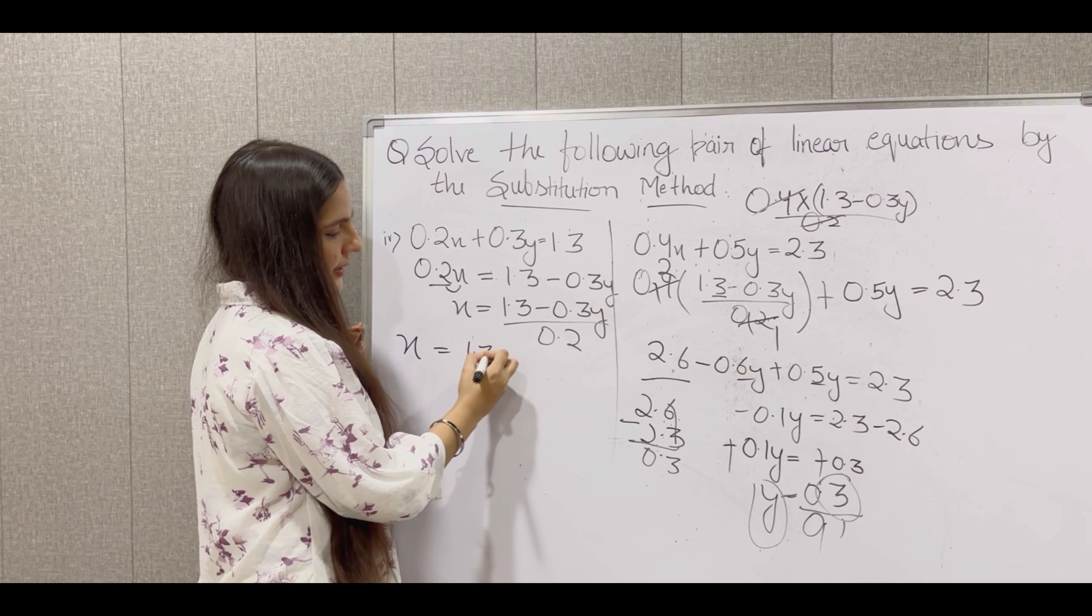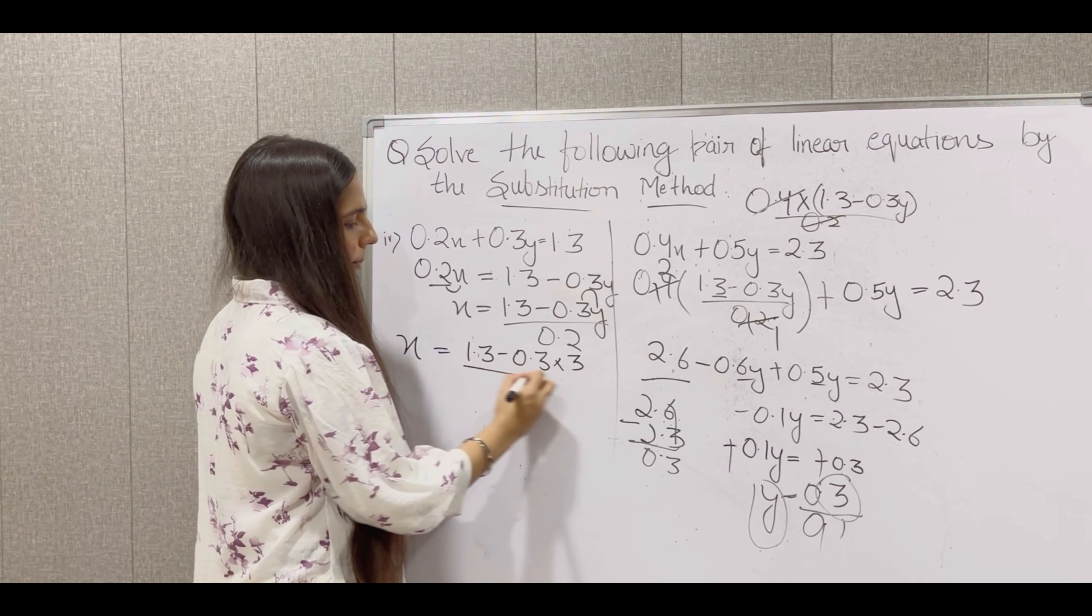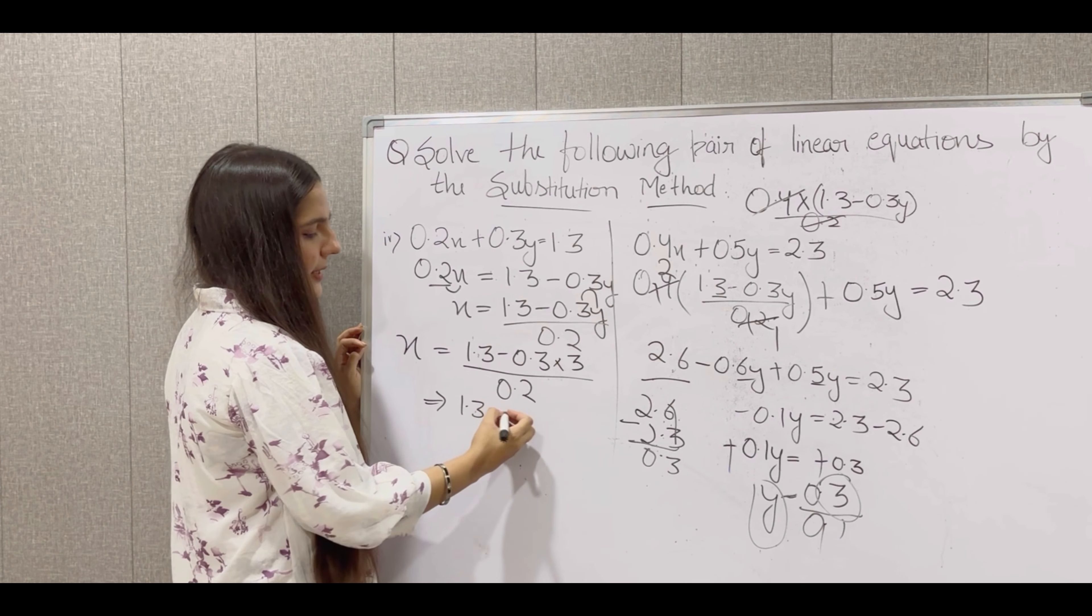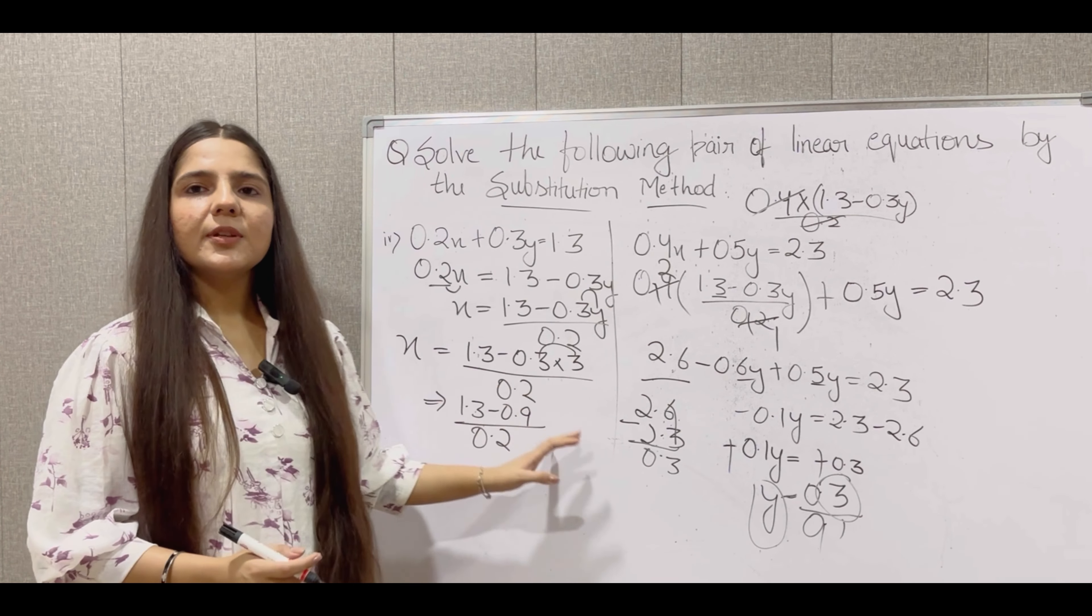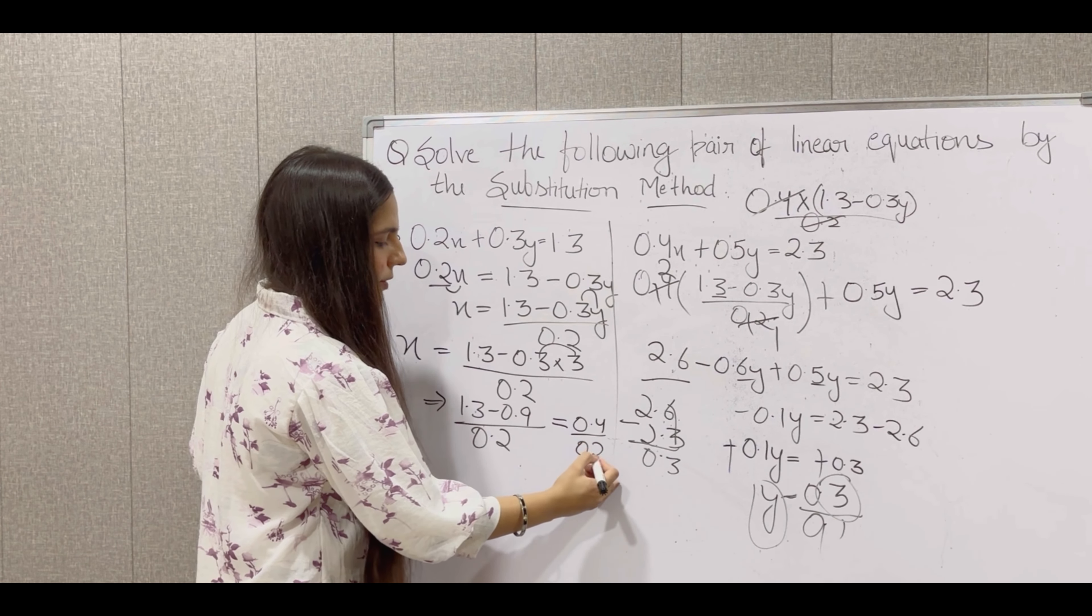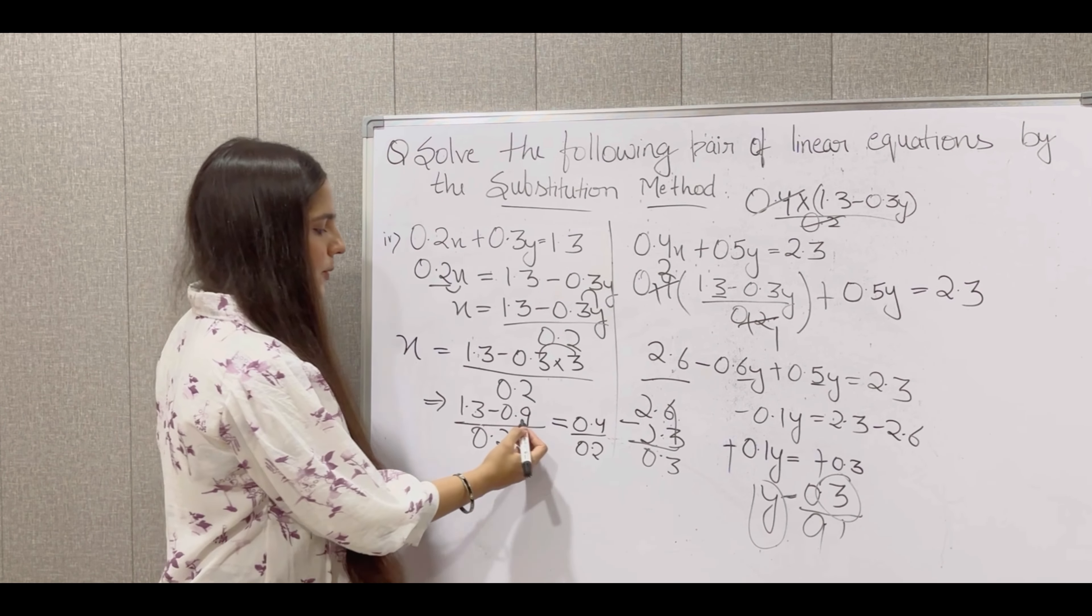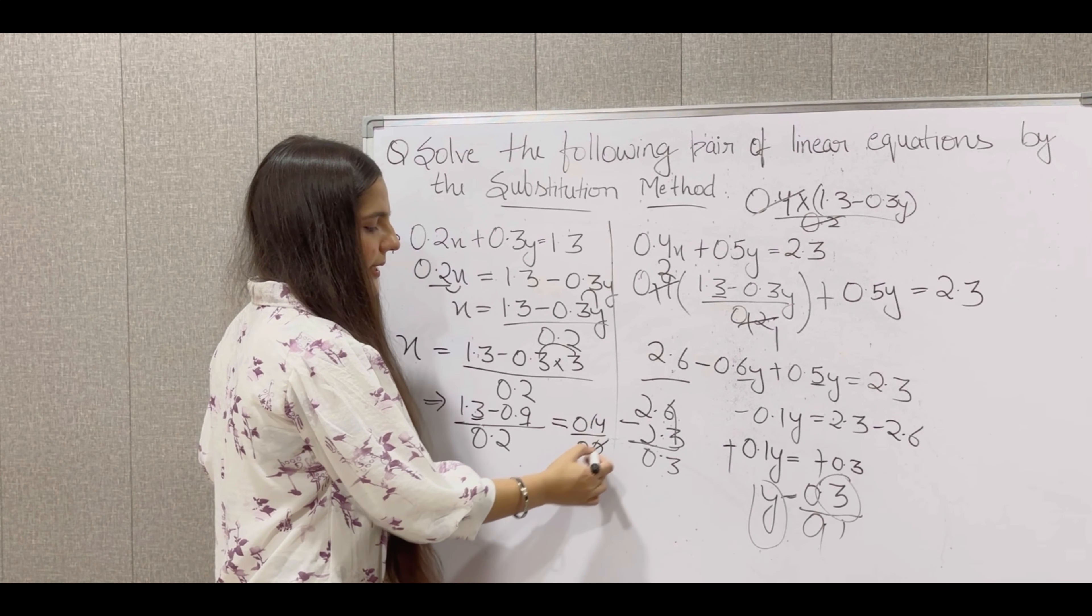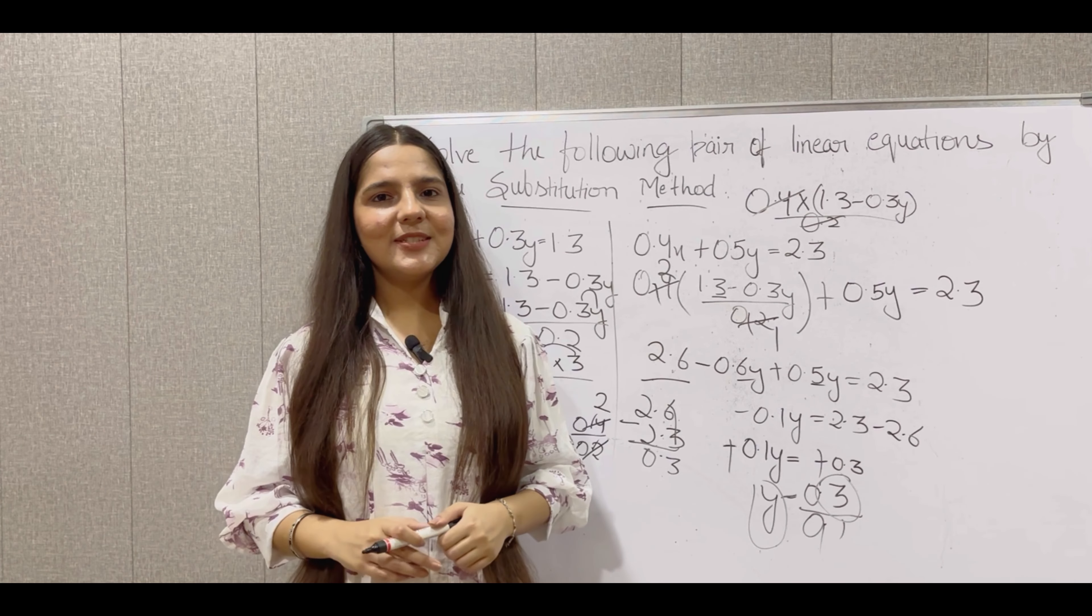Find x's value. So x is equal to 1.3 minus 0.3 into y, that is into 3, upon 0.2. So 1.3 minus, multiply this, 3 times 3 is 9, 0.3 times 3 is 0.9, upon 0.2. So 1.3 minus 0.9 gives us 0.4 upon 0.2. 13 minus 9 is 4. Because decimal places are the same, we put the decimal. Decimal cancels, 2 1s are 2. So value of x will be 2 and value of y is 3.